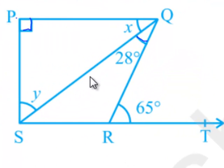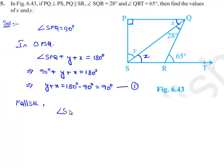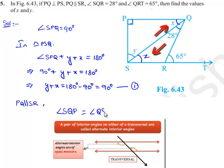Now considering that PQ is parallel to SR with QS as a transversal, angle PQS equals angle QSR as they are alternate interior angles. That is, angle SQP equals angle QSR equals X.